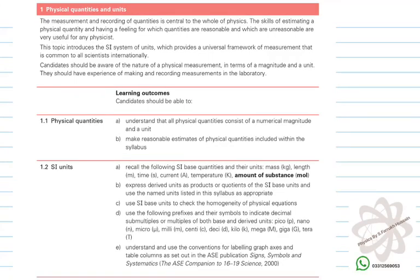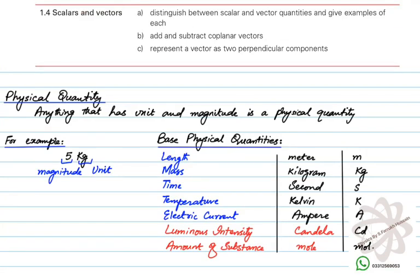This is Chapter One: Physical Quantities and Units, AS Physics. After completion of this topic, you will be able to solve questions related to these learning outcomes. Starting with physical quantity: a physical quantity is anything that has a unit and a magnitude. For example, 5 kg is an expression where 5 is the magnitude and kg is the unit. Every physical quantity must have both a magnitude and a unit.